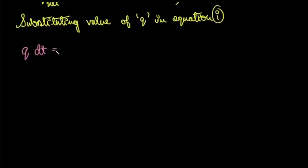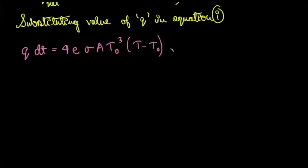Q_net equals 4·e·σ·A·T₀³·(T - T₀), and that equals -M·S·dT.